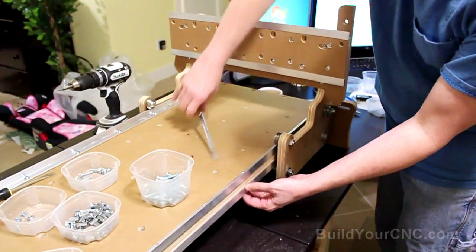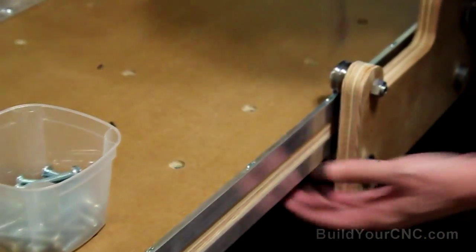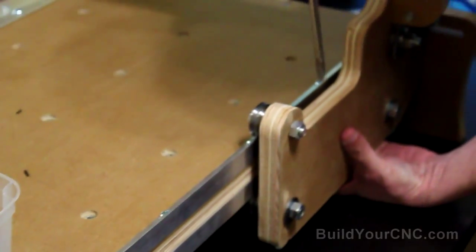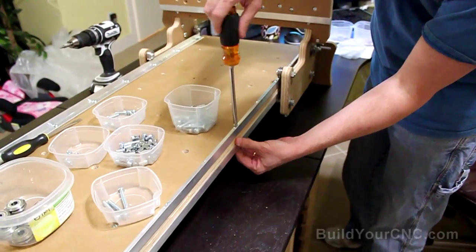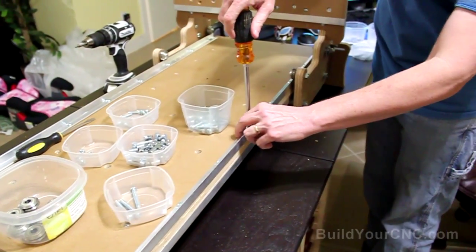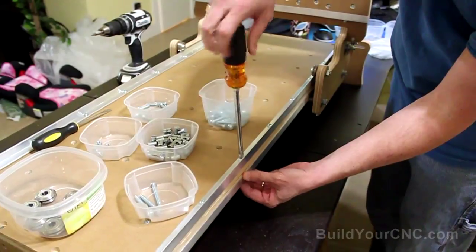And then just loosely tighten them just with your finger. And we're going to run it back and forth again. And what this is going to do is make sure that the rails are flat to the table when they do move into position and get settled.